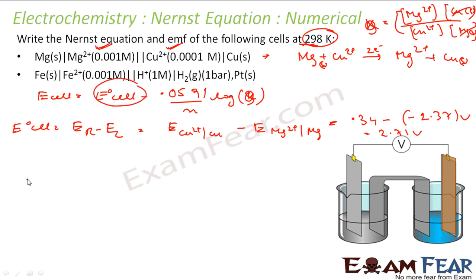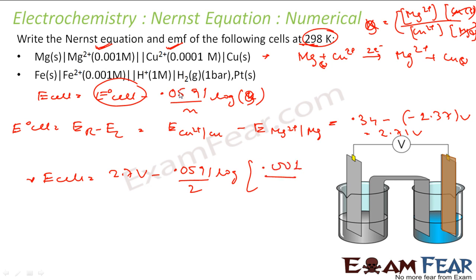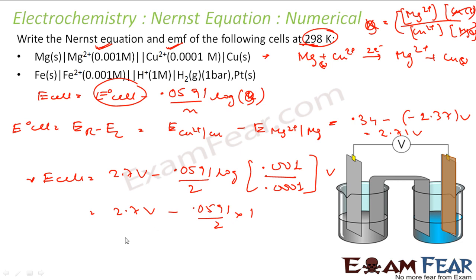Let me put the values in. E cell equals 2.71 V minus (0.0591/2) × log([Mg²⁺]/[Cu²⁺]). The concentration of Mg²⁺ is 0.001 M and Cu²⁺ is 0.0001 M, so the ratio is 10. Log of 10 is 1. This becomes 2.71 minus 0.03, giving E cell equals 2.68 V. That is my EMF for this first equation.